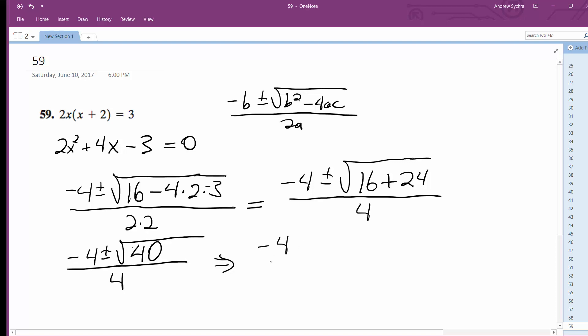So negative 4. And then you can pull out a 4. So 4 times 10 is 40, and you can pull out the 4, which is 2.